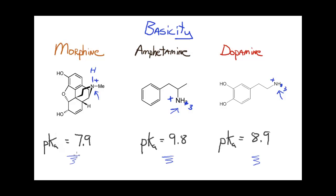So those pKa values are the measure of the relative acidity of the conjugate acids. So we can say that morphine, when protonated, is the strongest acid—it has the lowest pKa value—followed by dopamine, and the weakest acid of these three would be amphetamine.